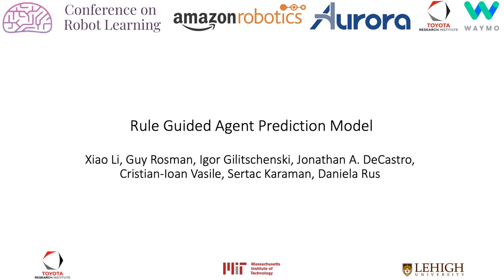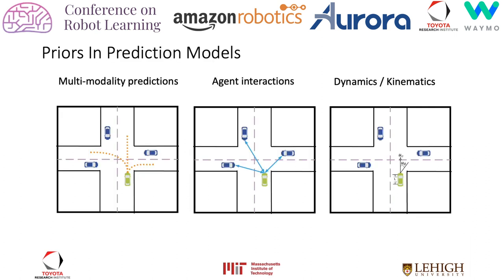Hi, my name is Xiao Li. Today I will talk about how we can incorporate rules into agent prediction models in autonomous driving. Recent advances in trajectory prediction take advantage of important priors about the problem domain such as multimodality of possible features, interactions among road agents, and dynamics.